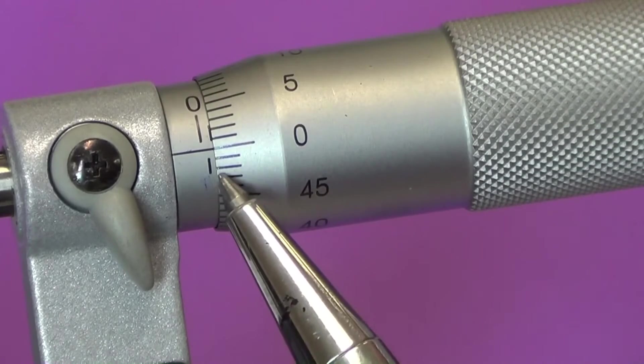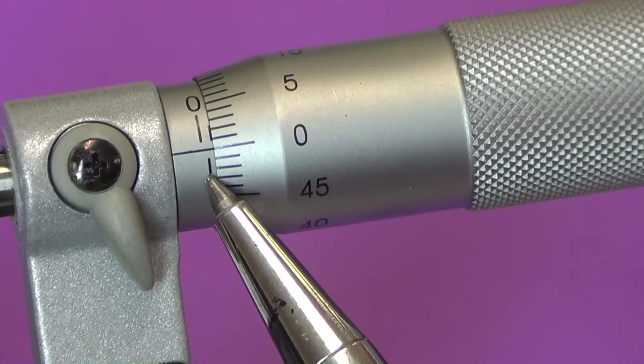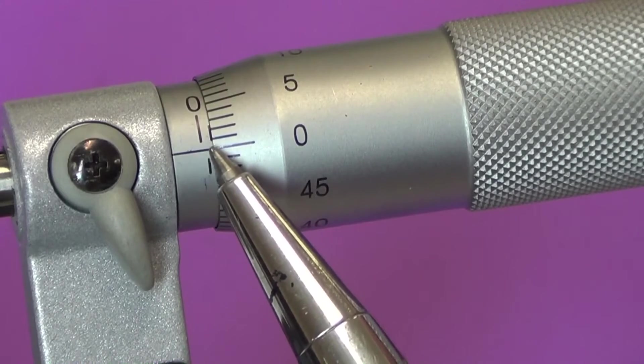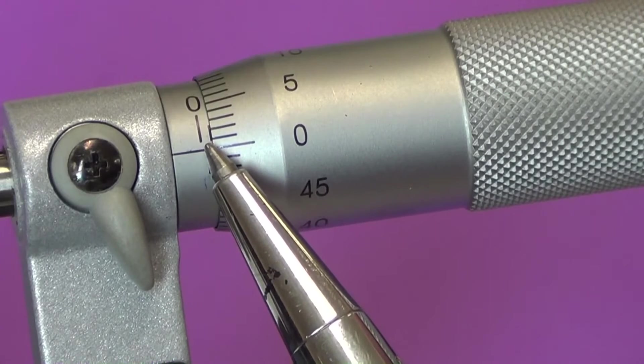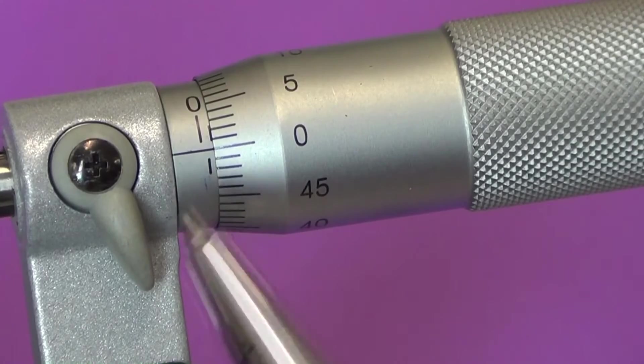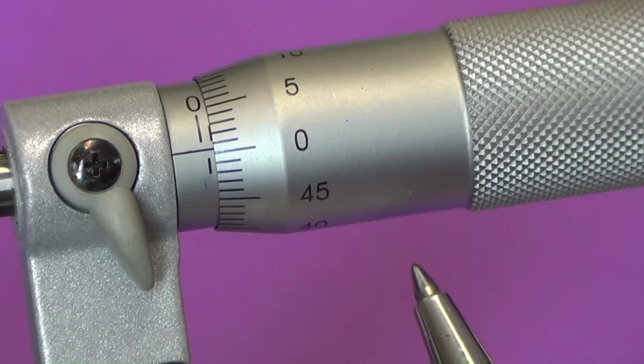We have now turned the thimble through two complete revolutions, each of 50 divisions, passing through 50 divisions, gives us 100 divisions, and consequently, that is why each increment or division equals one hundredth of a millimeter.